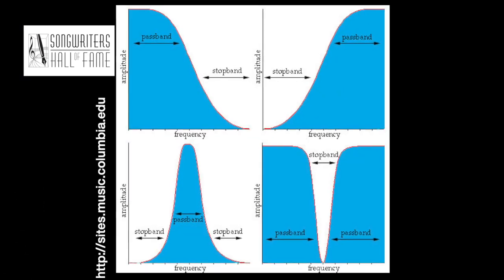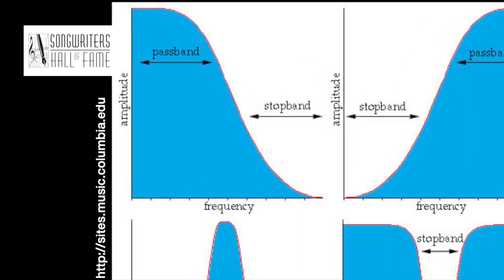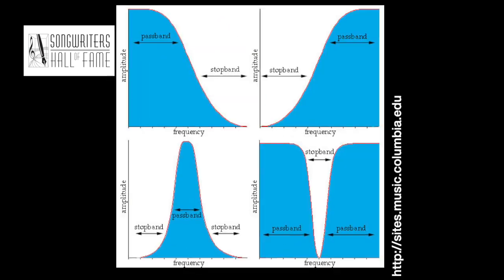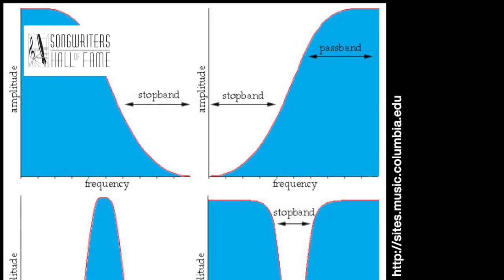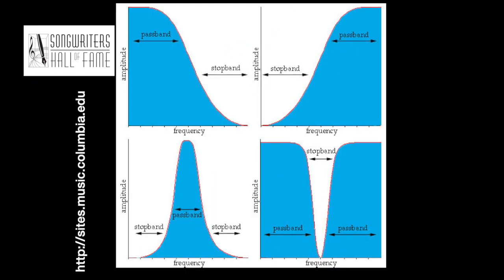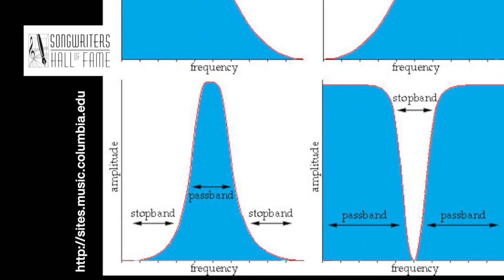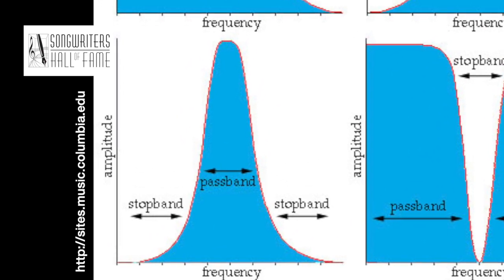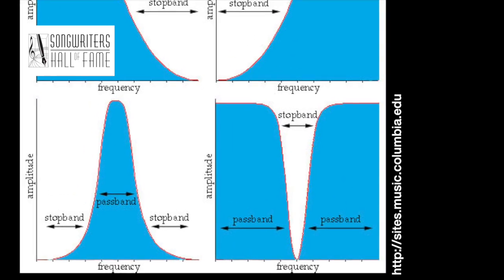The names of the filters tell you exactly what's happening. A low-pass filter allows frequencies below a set frequency, called the cutoff, to pass through. A high-pass is just the opposite, allowing frequencies above the cutoff to pass through. A bandpass will allow a band of frequencies above and below two cutoff frequencies to pass, while a notch boosts or attenuates a center frequency.